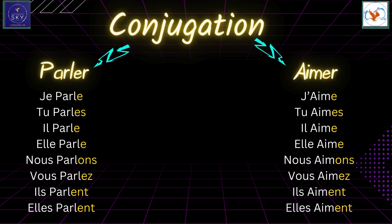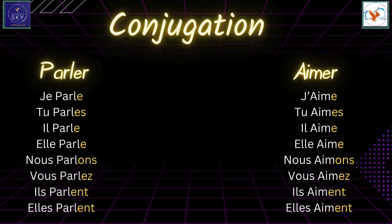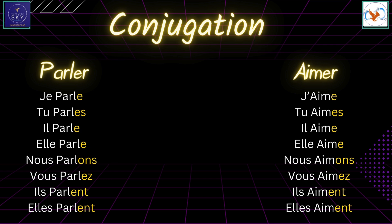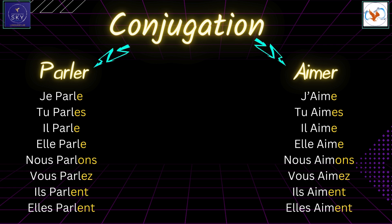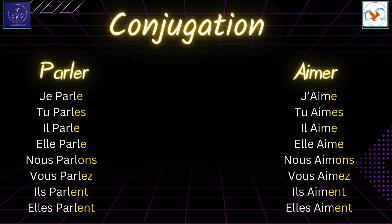And for the verb aimer: j'aime, tu aimes, il aime, elle aime, nous aimons, vous aimez, ils aiment, elles aiment. Did you see? The root remains the same and only the ending changes based on the subject pronoun.